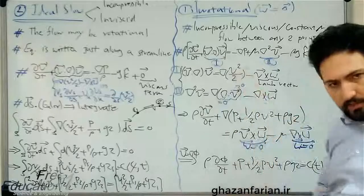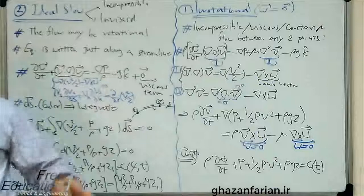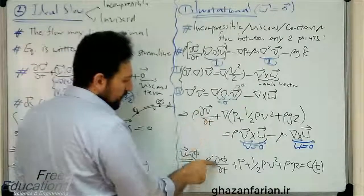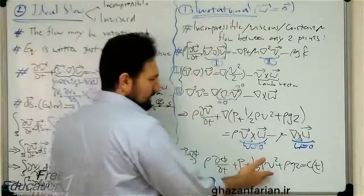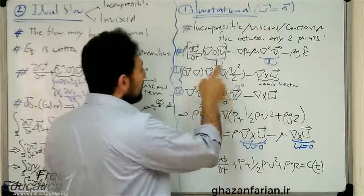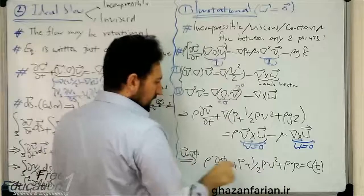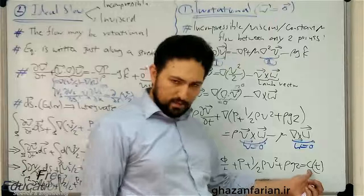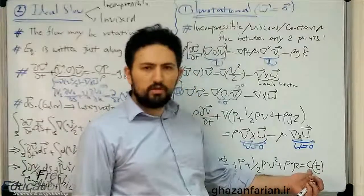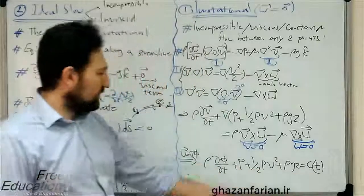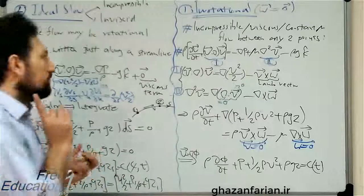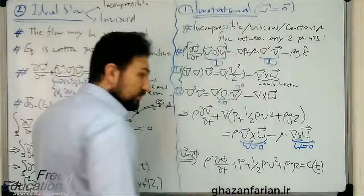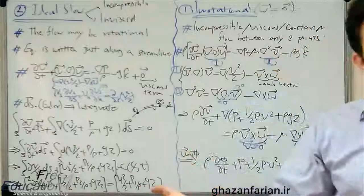We then have the partial derivative of the gradient of φ and the gradient of the remaining terms. Integrating this equation between any two points, we can eliminate the gradient operator and write the equation in terms of the partial derivative of φ, the pressure term, the inertia-based kinetic term, and the gravity force. The zero on the right-hand side becomes a constant after integration — generally a function of time for unsteady flow. This is the unsteady Bernoulli's equation for irrotational, incompressible, viscous (constant viscosity) flow, valid between any arbitrary pair of points.